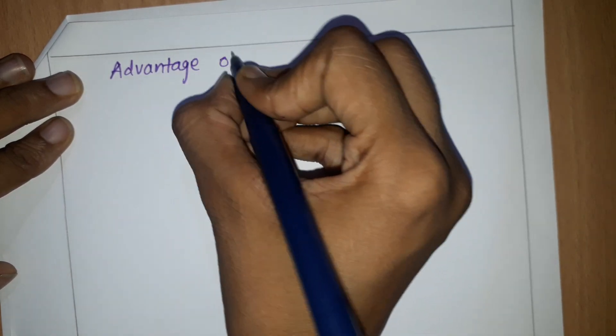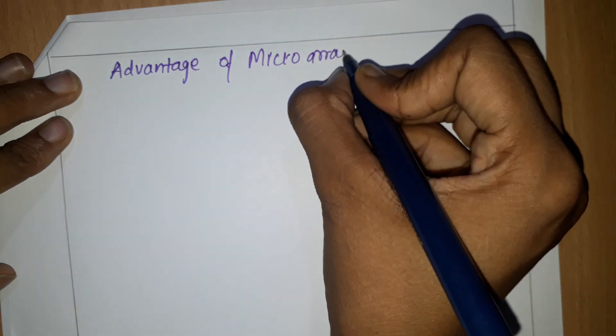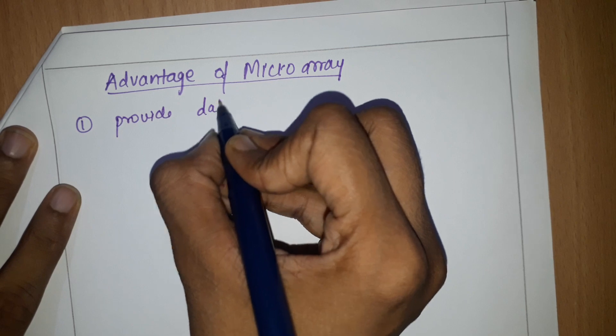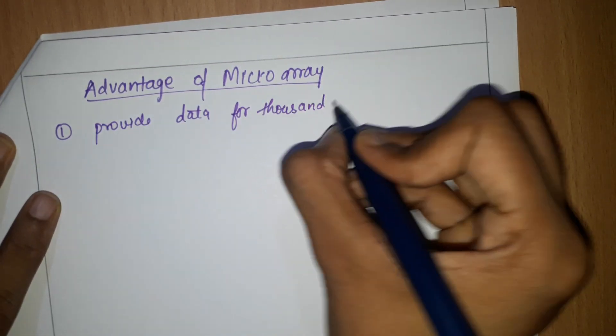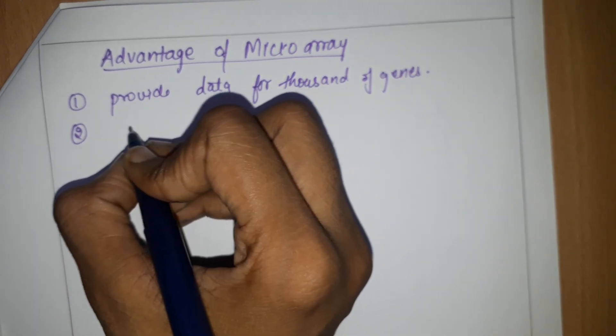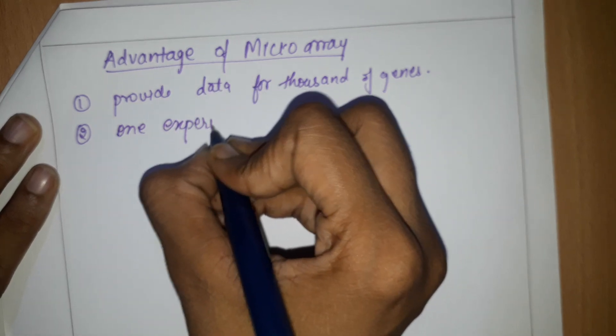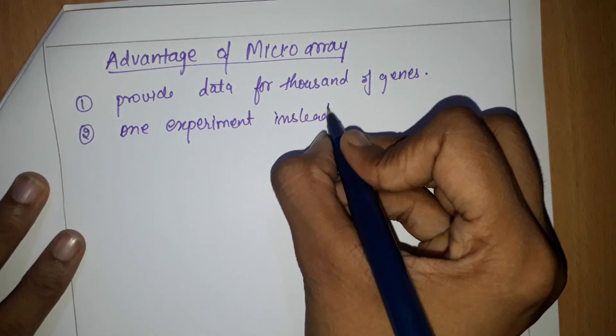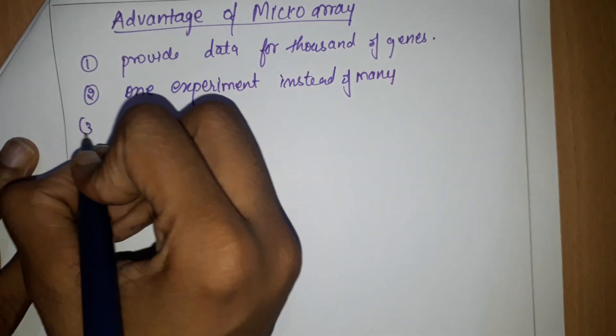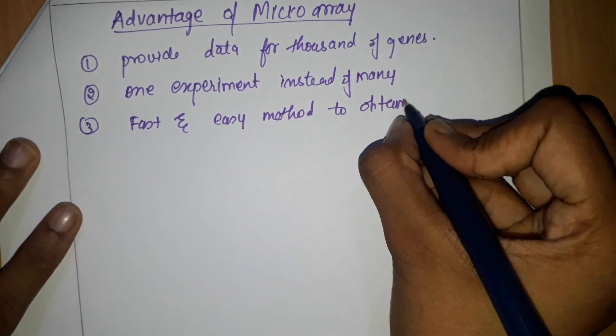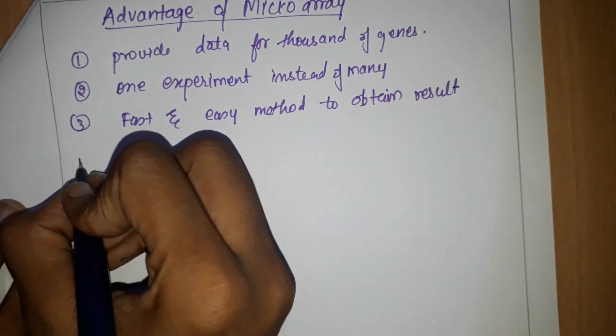The advantages of microarray: first, it provides data for thousands of genes. Next, we have to do only one experiment to get the information about thousands of genes instead of many. Next, it is a fast and easy method to obtain good results.